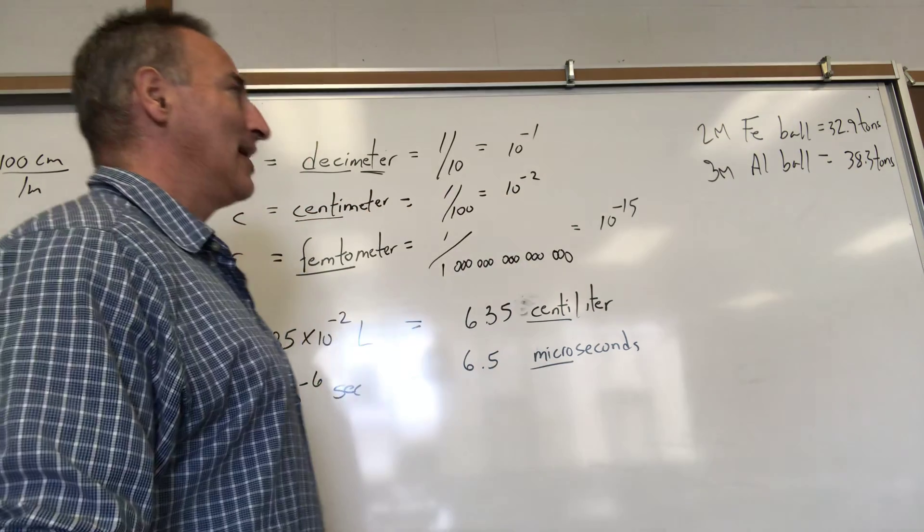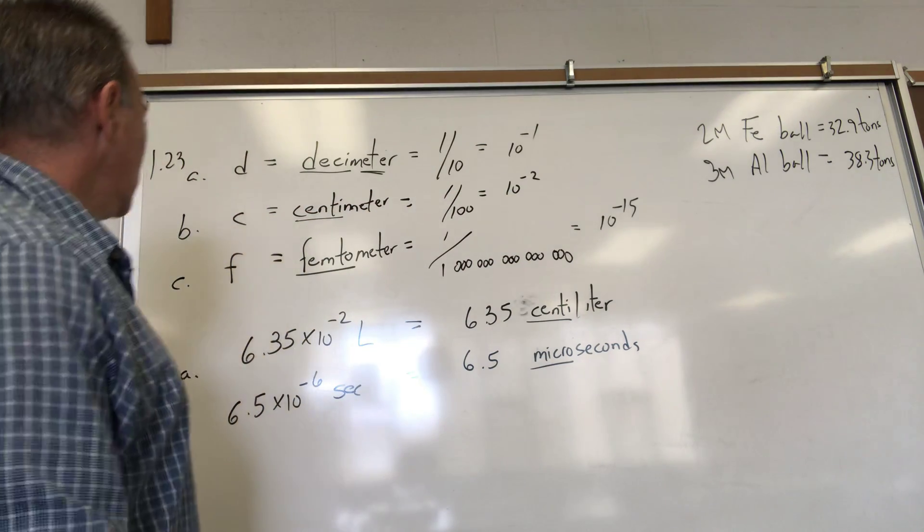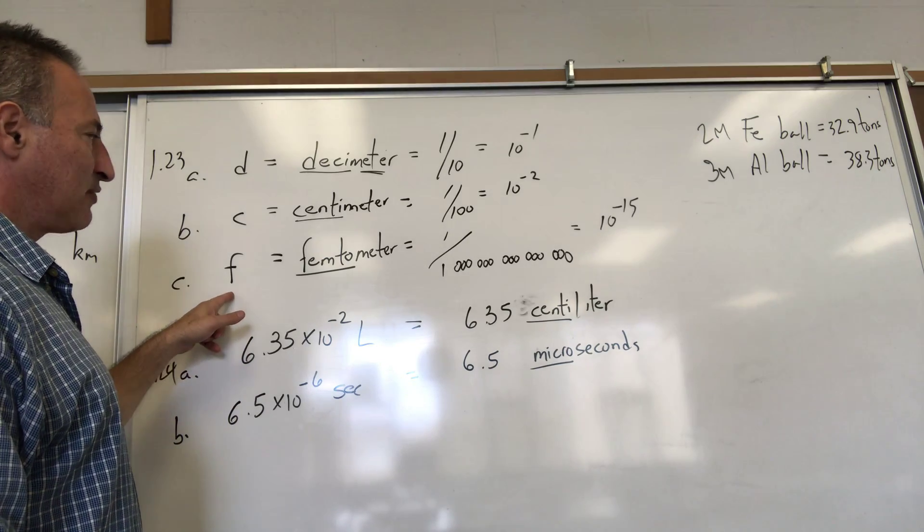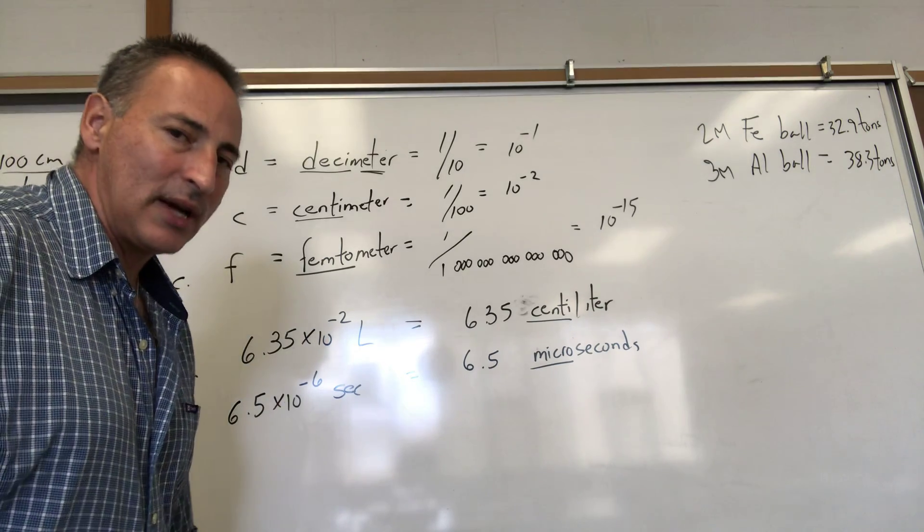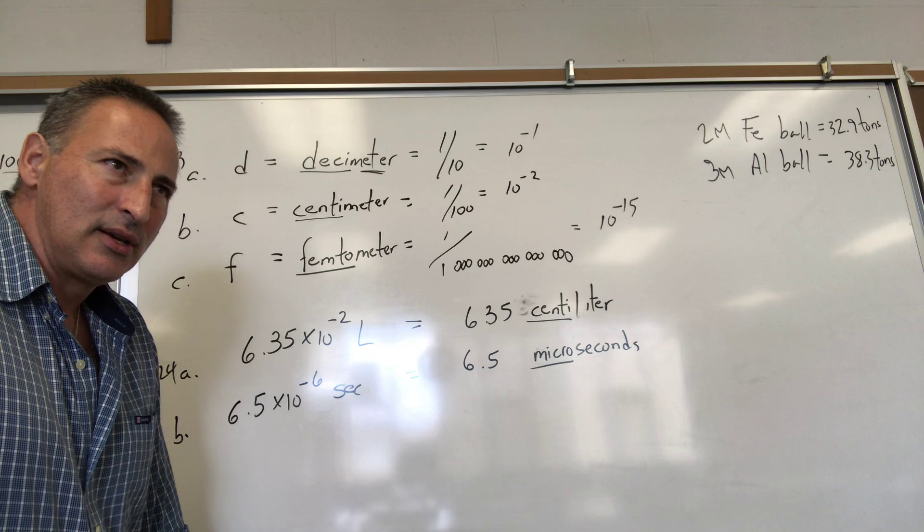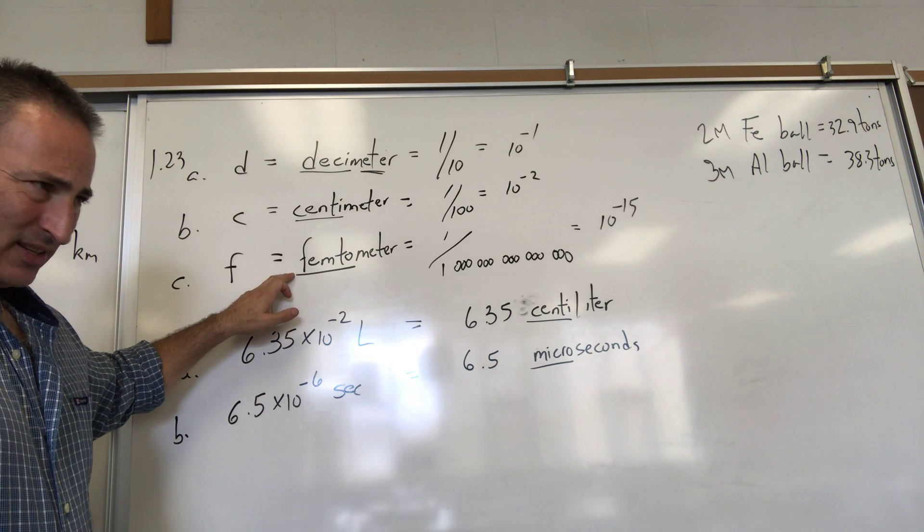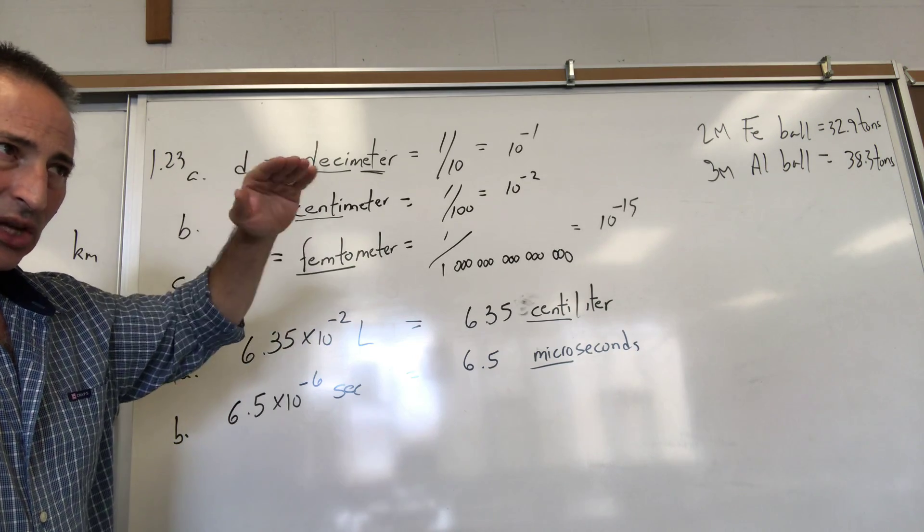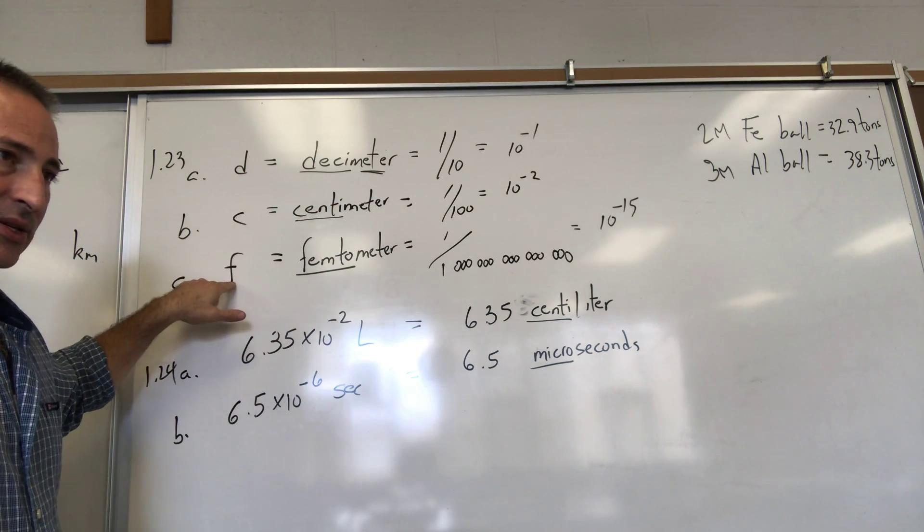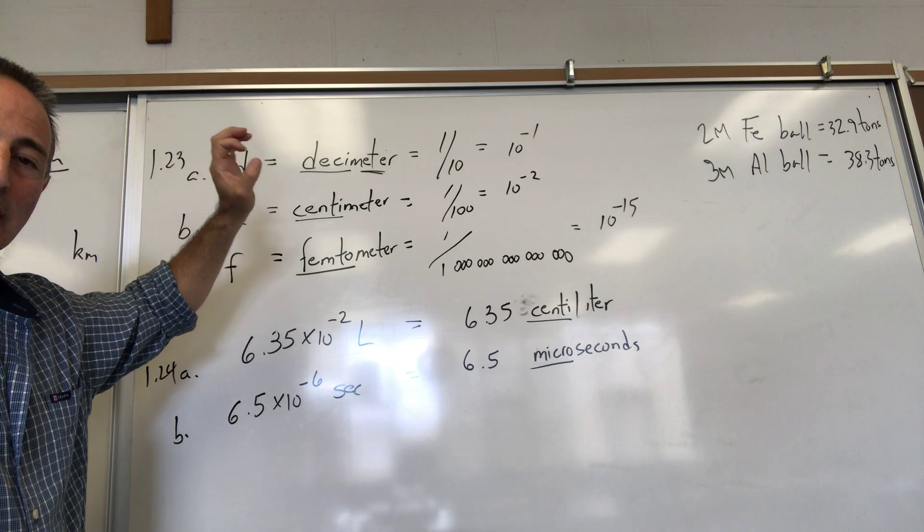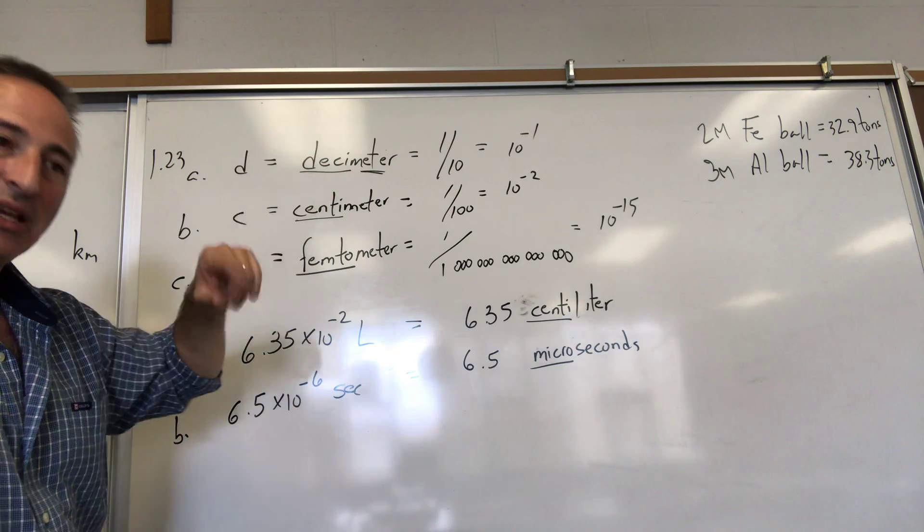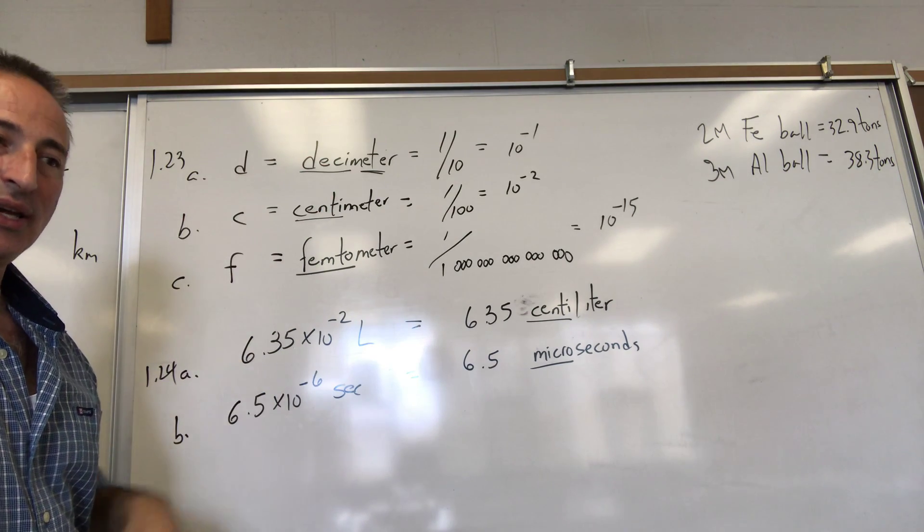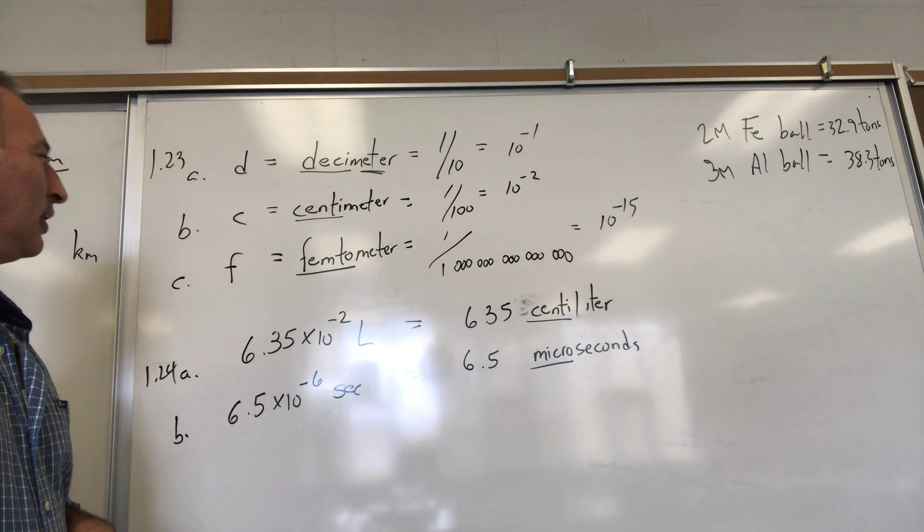f stands for femtometer. If you recall when I gave you the list, everything that's kilo and smaller is lowercase, everything that's bigger than kilo they write uppercase. So mega is capital M, giga capital G, and so on.